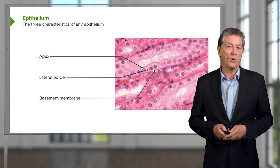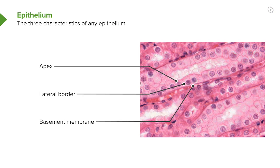All epithelia sit on a basement membrane and therefore are anchored to underlying connective tissue. We call that underlying connective tissue lamina propria, and I'll be talking about lamina propria a number of times in this lecture and also in other lectures.